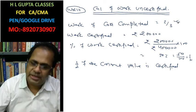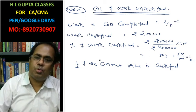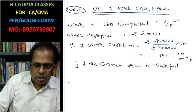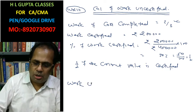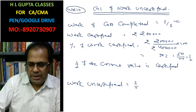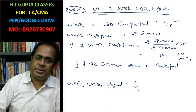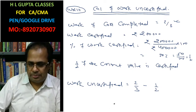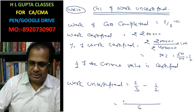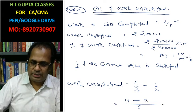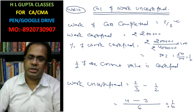Work is done by 2/3, but half of the work is certified by the engineer. To find uncertified portion, take LCM of 3 and 2, which is 6. Work completed = 4/6, work certified = 3/6. Therefore, uncertified work = 4/6 − 3/6 = 1/6 of the contract.